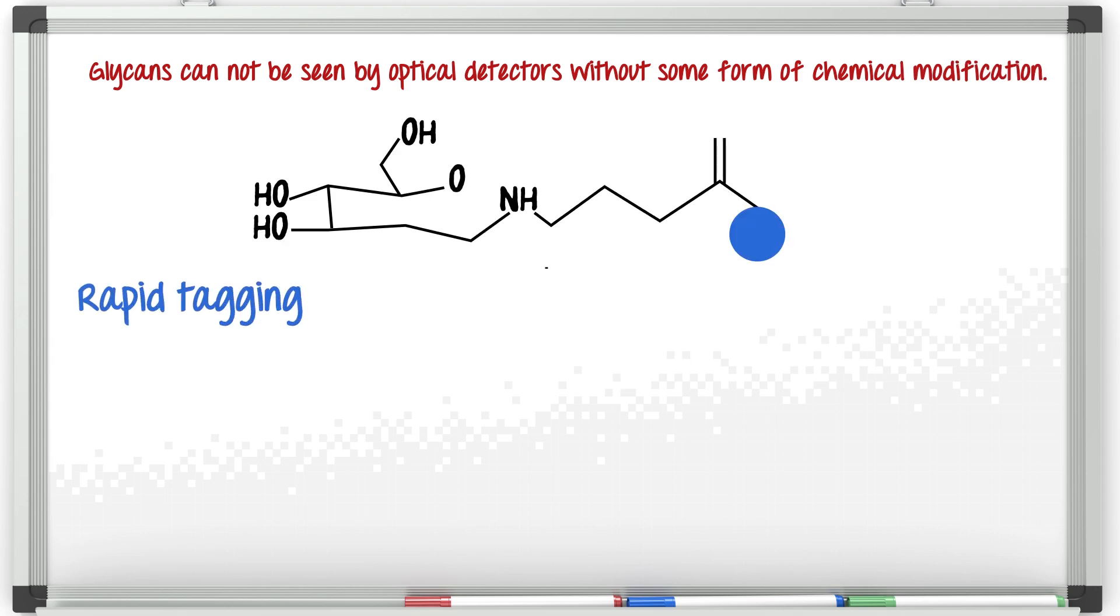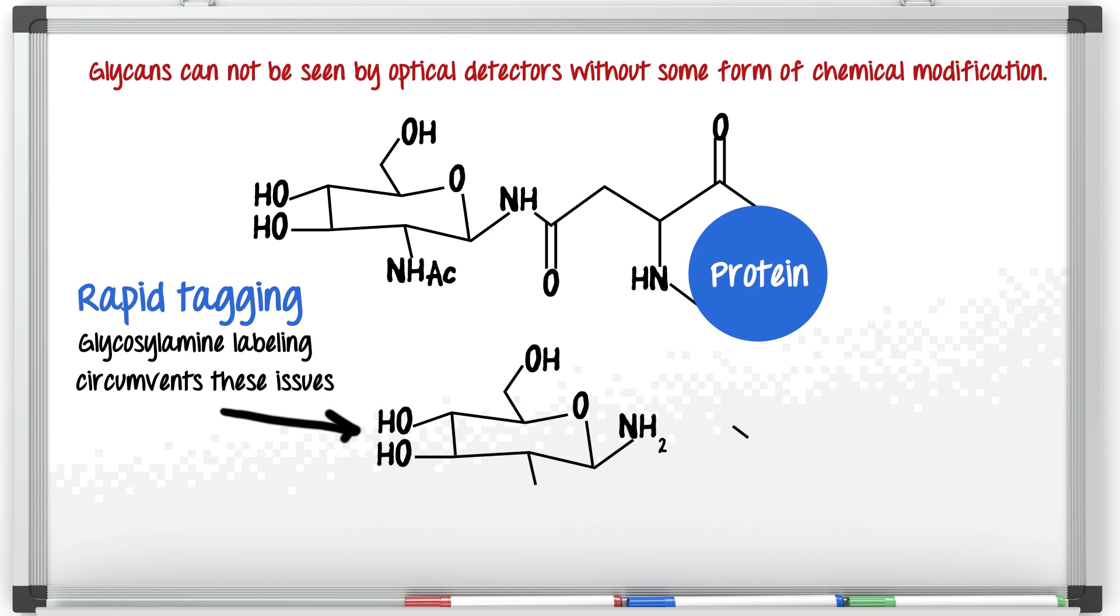The fact is, glycans cannot be seen by optical detectors or mass spec without some form of chemical modification. This modification, whether the reaction is slow or fast, is the key to sensitivity on any detector. This is starting to make a lot of sense now, Daryl.